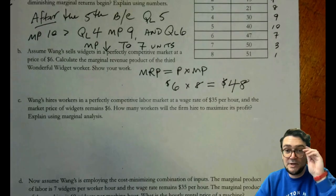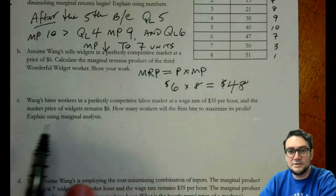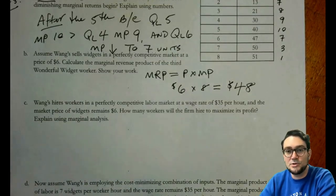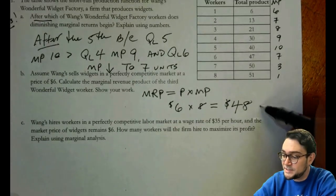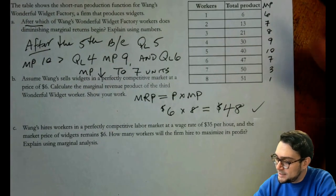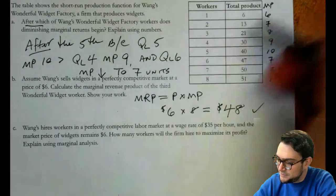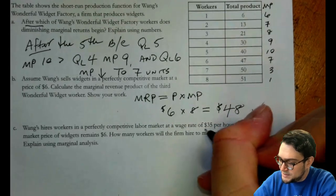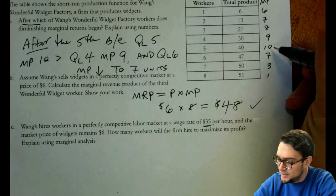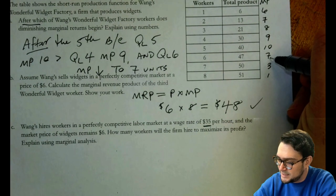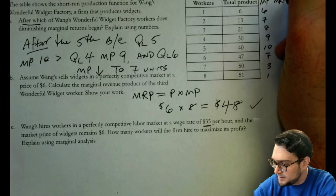Wang's hires workers in a perfectly competitive labor market at a wage rate of $35 an hour and the market price which remains six. How many workers will they hire? So we know they're going to hire this guy. We're going to hire, let's see what we got. That was the third worker and the wage is 35. So we know that they're going to hire this guy. Let's just do a column here. MRP.